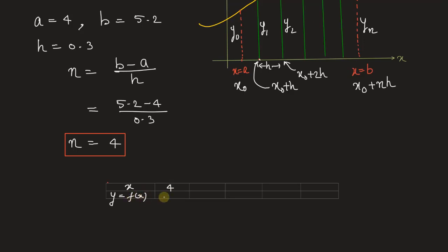x will be: the initial value is 4, so the corresponding function value will be ln 4. The second value will be 4.3 as the interval is 0.3, with ln 4.3. Then 4.6, 4.9, and the final value 5.2.